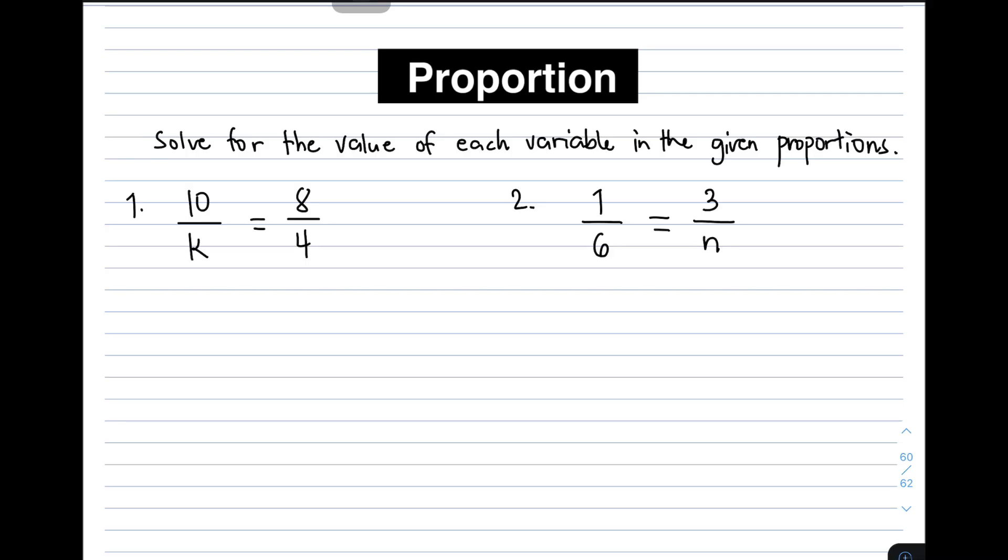We have here the first proportion, 10 over k is equal to 8 over 4. As you can see, we have here a variable k. We're in the given direction for this problem. Is that we need to solve for the variable or for the value of each variable in the given proportions. So our task here is to find the value of k for us to complete the given proportion.